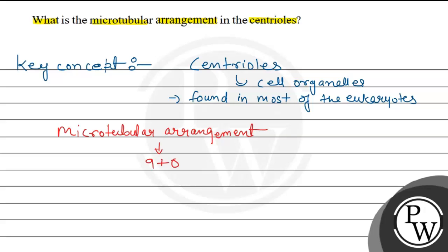And here, each microtubule is a triplet and is formed of 3 sub-tubules which are called A, B and C. And the centrioles' microtubular arrangement is something like this. So the centrioles have 9 triplets.